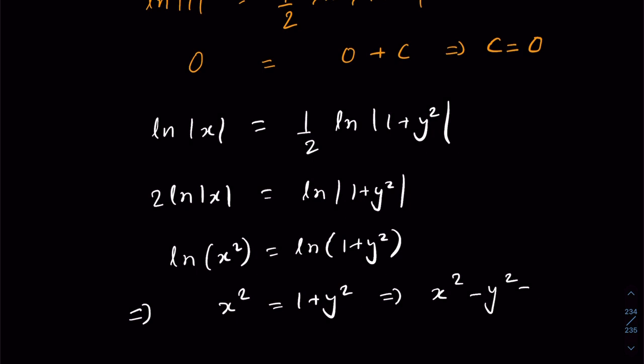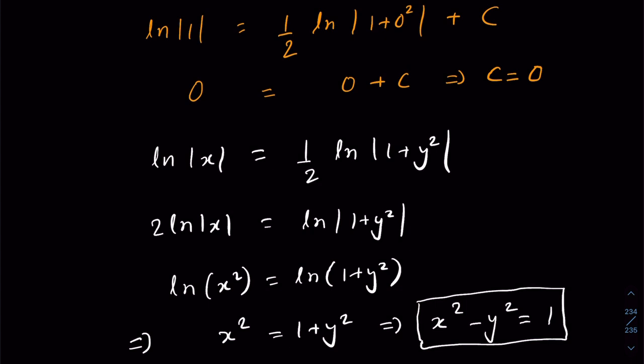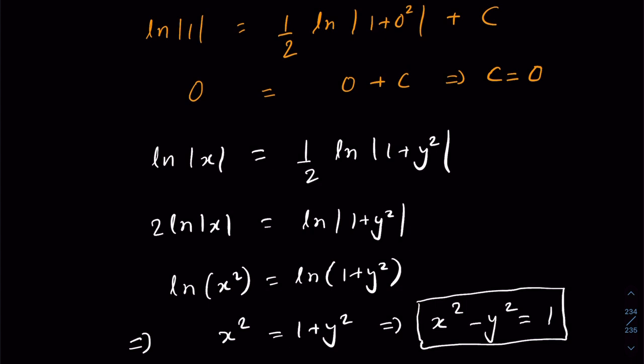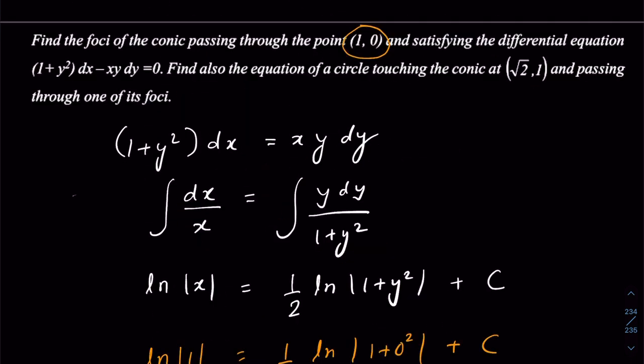The conic equation simplifies to x² − y² = 1. Students who have studied hyperbola in Class 11 will easily recognize this as a rectangular hyperbola. So the conic given to us is a rectangular hyperbola.